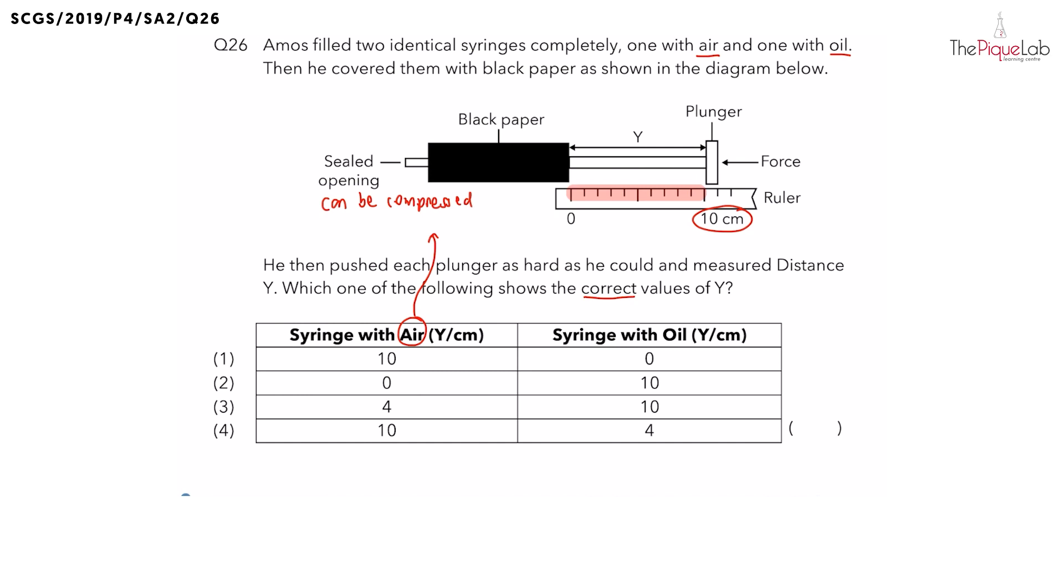Now the question here is why? What is the property of air that allows it to be compressed? Yes, it is because air has no definite volume. Now since air can be compressed and the plunger gets pushed in, what do you think will happen to distance y? Is distance y going to increase or decrease?